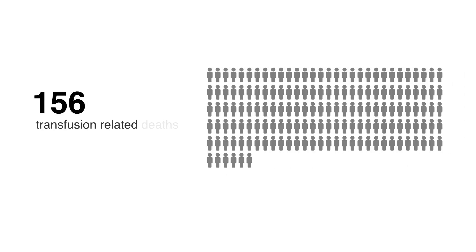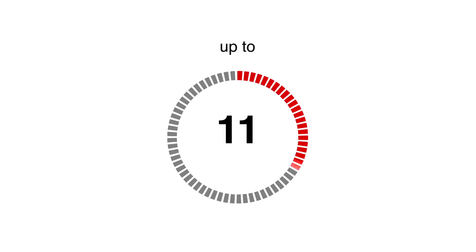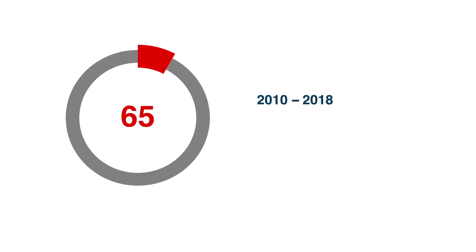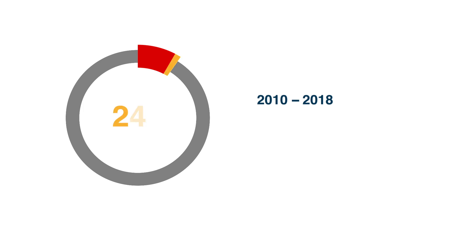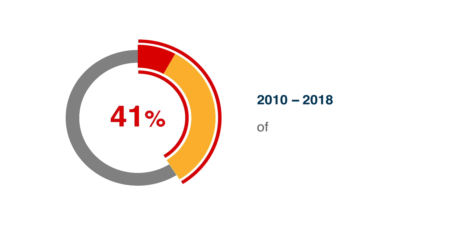In the nine years from 2010 to 2018, there were 156 transfusion-related deaths, of which 81 — that's 52% — were caused by pulmonary complications, most commonly TACO. TACO may present up to 24 hours after transfusion, but usually within 6 to 12 hours. In the same nine years, 65 out of 757 patients with TACO died, and an additional 246 out of 757 suffered serious complications. Together, these account for 41% of all cases of TACO.